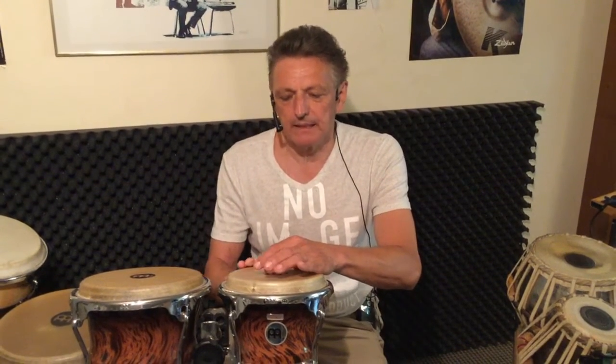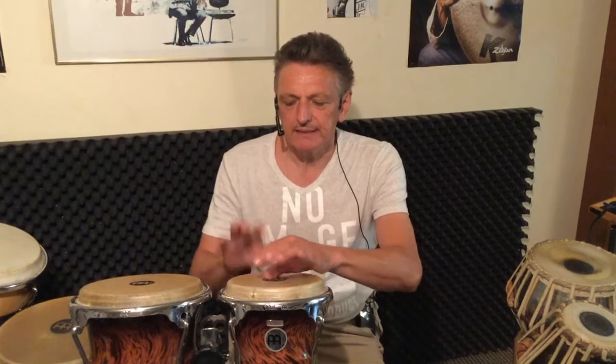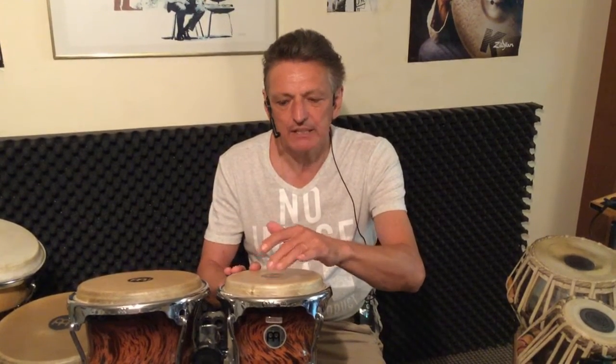Jetzt geht es darum, dass wir diese Strukturen auf Bongos auch anwenden, die 3-3-3-3-4 und sonstige Konstellationen der Dreiergruppen. Die Konakole Takatakite kann ich folgendermaßen aufteilen: Zeigefinger, Daumen und die beiden. So entsteht Takita!